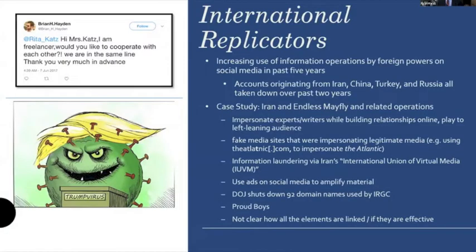In terms of international replicators, there are a tremendous number operating right now. Specifically in the U.S., accounts related to Iran, China, Turkey, and Russia have been taken down by Twitter and Facebook. I chose Iran as my case study because they represent the most interesting example of a sophisticated and expansive influence operation that mirrors many of the methods used by Russia in 2016.